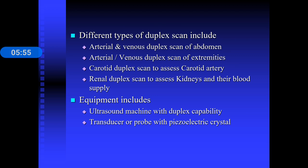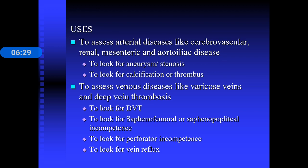The types of duplex scan include arterial or venous duplex scans of the abdomen and extremities, carotid duplex scan to assess the carotid artery, and renal duplex scan to assess the kidneys and their blood supply. The equipment required is a regular ultrasound machine with duplex capability, along with transducers including linear probes, curved probes, and 2D or 3D image-forming probes.